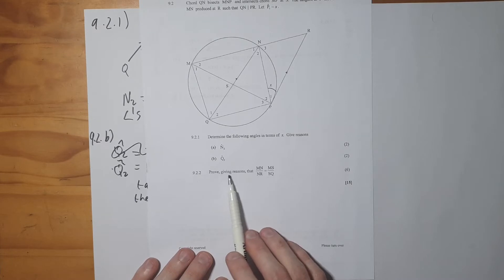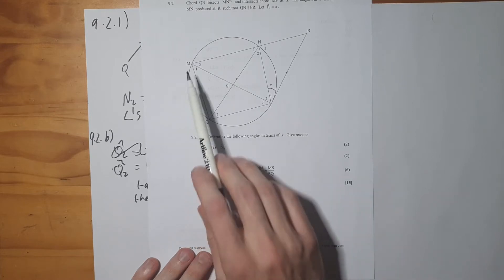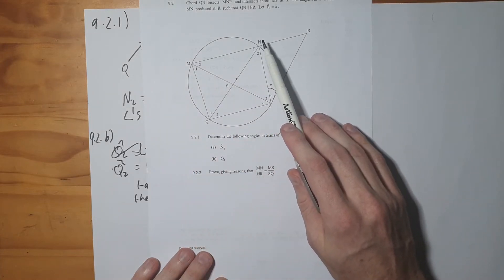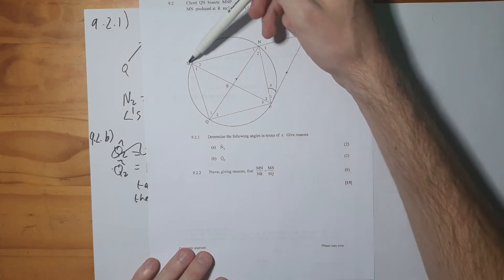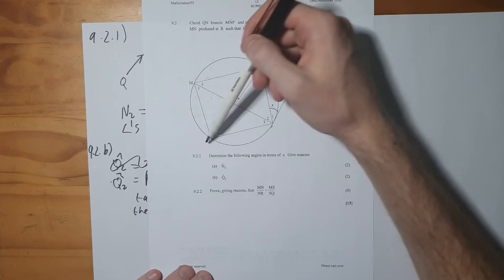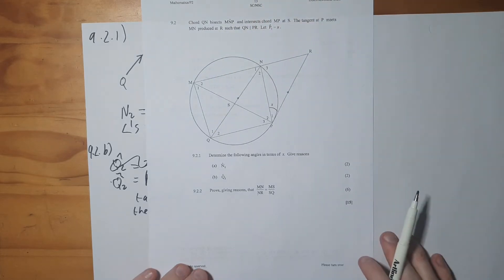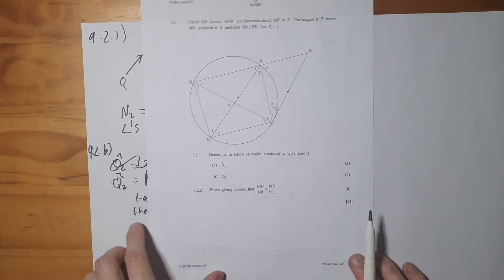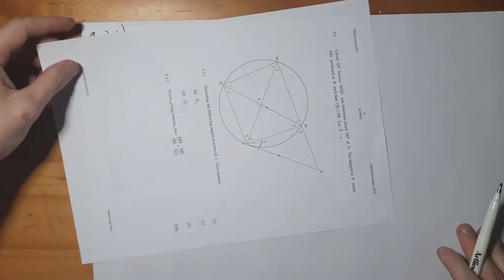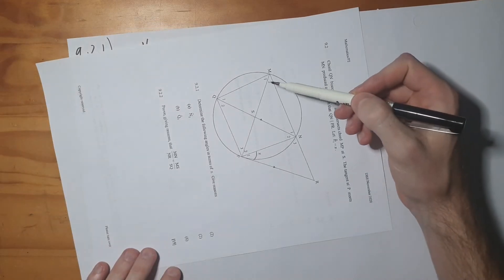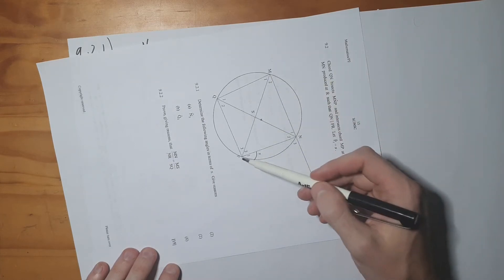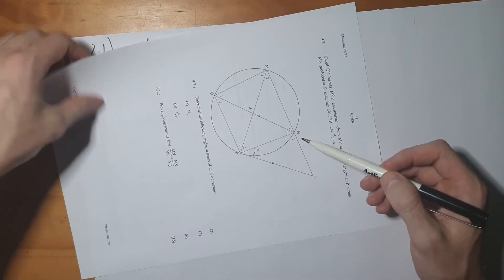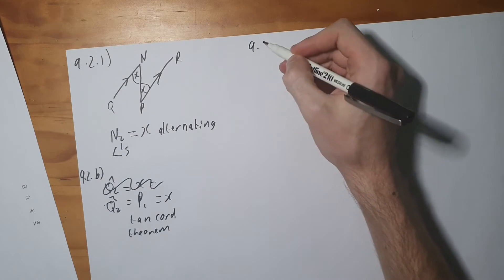So now we have that N2 equals to X and Q2 equals to X, so you can fill those in as well. Now, 9.2.2 says prove with given reason that MN over NR is equal to MS over SQ. So I'm going to turn the page slightly just to help visualize this. If you look over here, we can see that we have a triangle sitting over here, and this line, the base of the triangle, is parallel to that line.